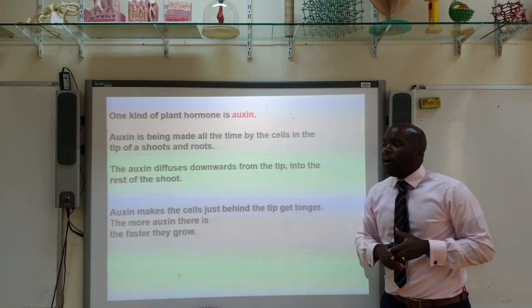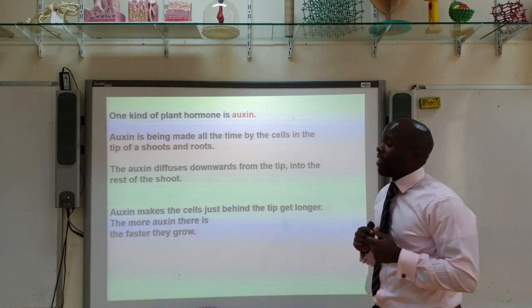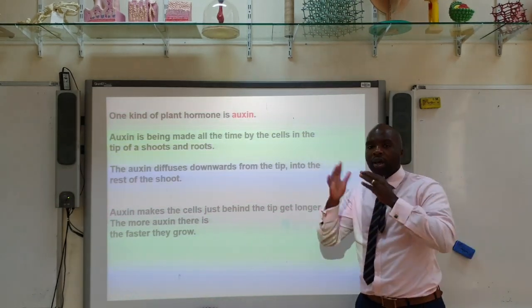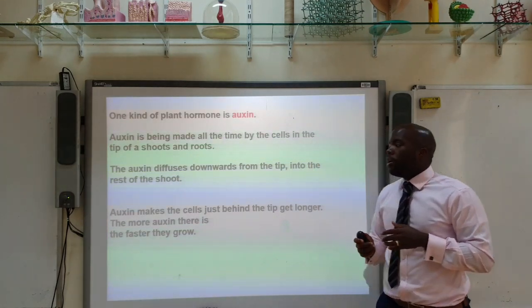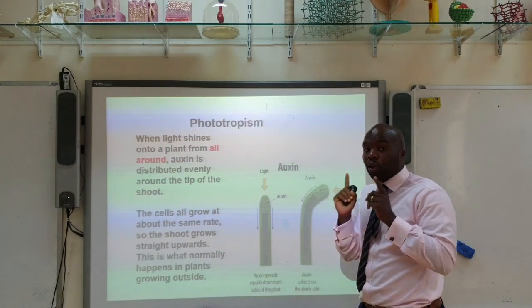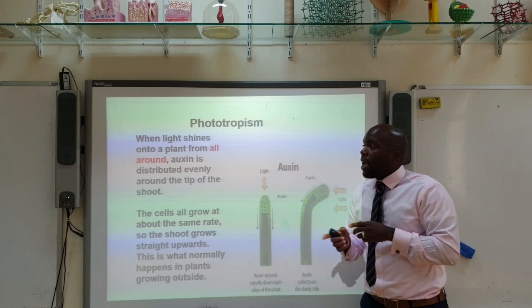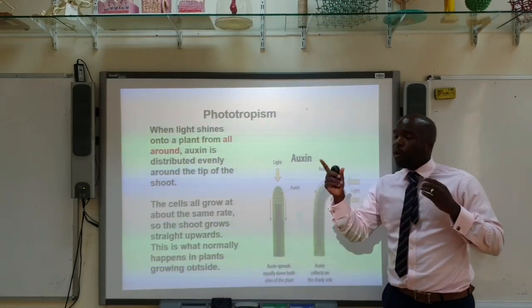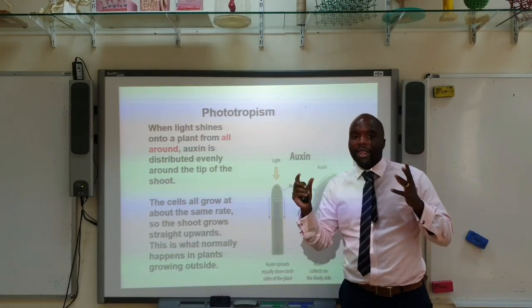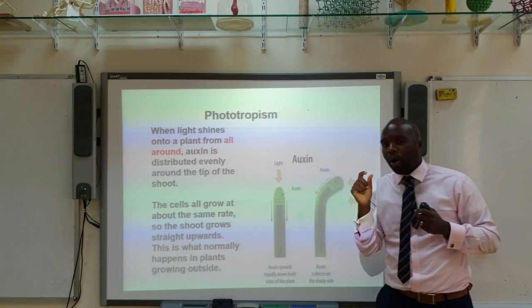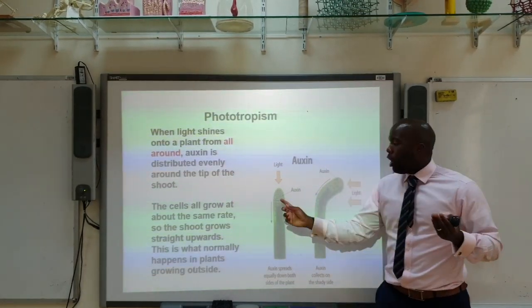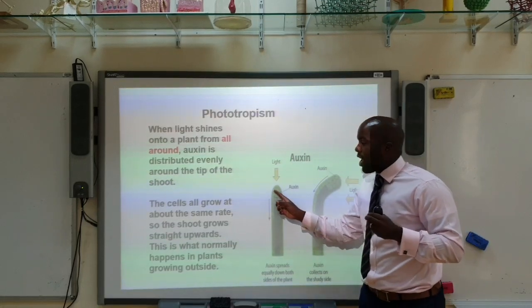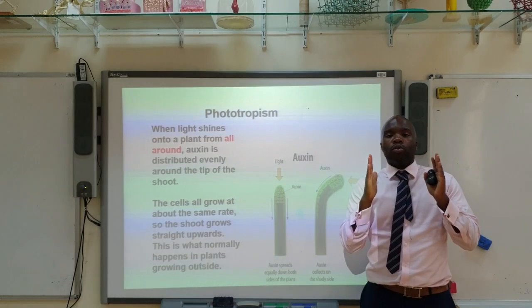Today we're looking at a hormone known as auxin. Auxin is produced all the time by roots and shoots and can travel to different parts of the plant. Phototropism is a change in direction or rate of growth by a plant due to light. When light shines on the plant from all around, the auxin is evenly distributed in the shoot, so all cells grow at about the same rate and the shoot grows straight up.